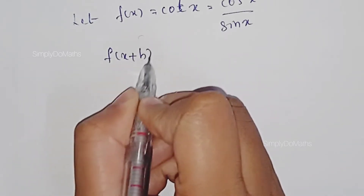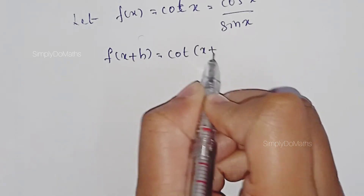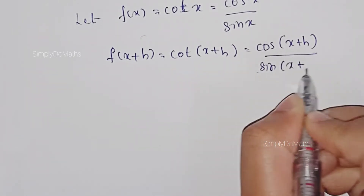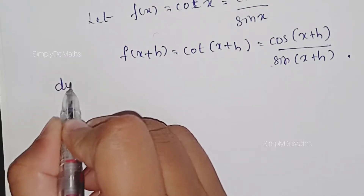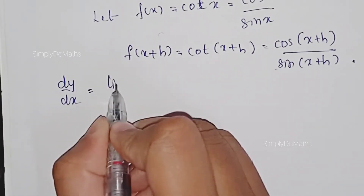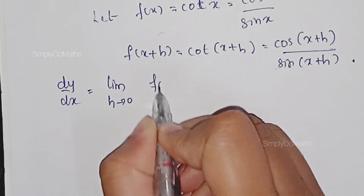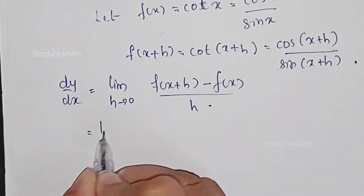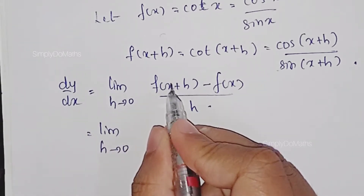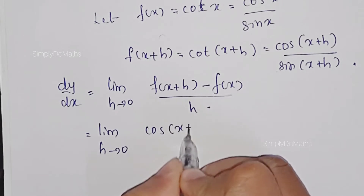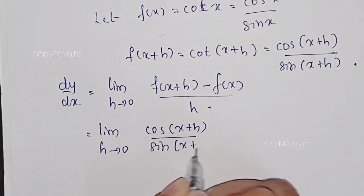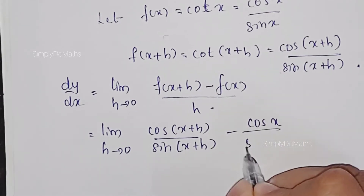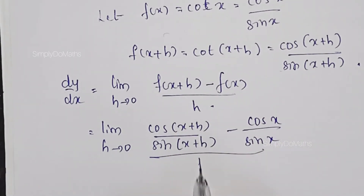f(x+h) will be equal to cot(x+h), that is cos(x+h) divided by sin(x+h). The derivative of the function is equal to the limit as h tending to 0 of f(x+h) minus f(x) divided by h. This equals the limit as h tending to 0 of cos(x+h) divided by sin(x+h) minus cos(x) divided by sin(x), whole divided by h.